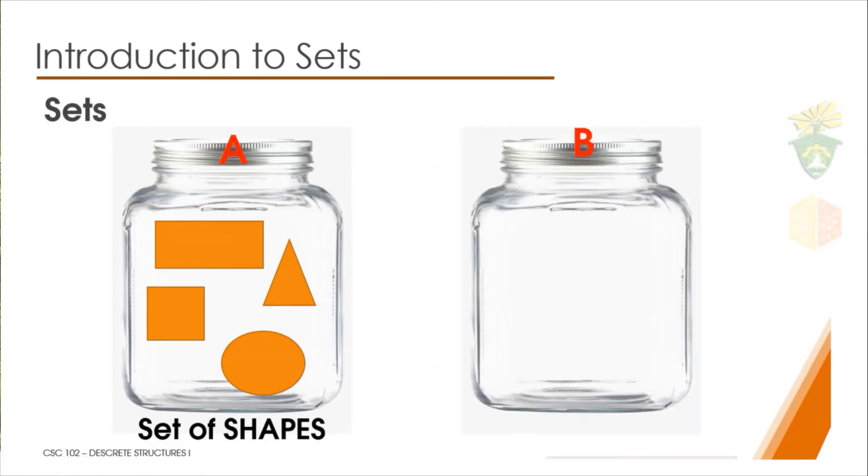Another example is, again, imagine that a set is like a container. Let us define a container called B. We put the number 11, 25, 35, 41, and 56 as the elements or members of our container.